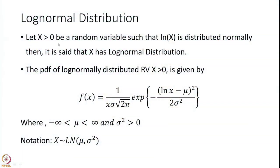First we introduce what is known as log normal distribution. As the name says, it is a positive random variable whose natural log follows a normal distribution — then we say that x has a log normal distribution. So if there is a random variable whose natural log follows normal distribution, then we say that x follows log normal distribution.